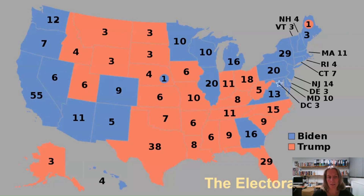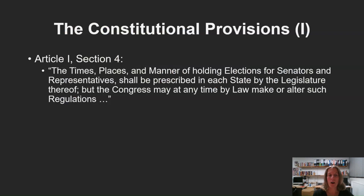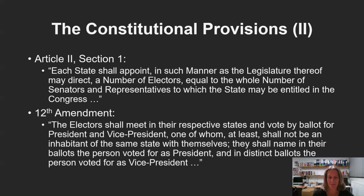This is partly because the US is a federal system where states retain significant power. Article 1, Section 4 of the US Constitution explicitly gives control over running elections to the states, and this has been interpreted to include the presidential election. Under Article 2, Section 1, Americans don't vote directly for the president. When Americans vote, they're voting for a slate of state-level party-chosen electors, who in December of election year formally meet to elect the president and vice president.